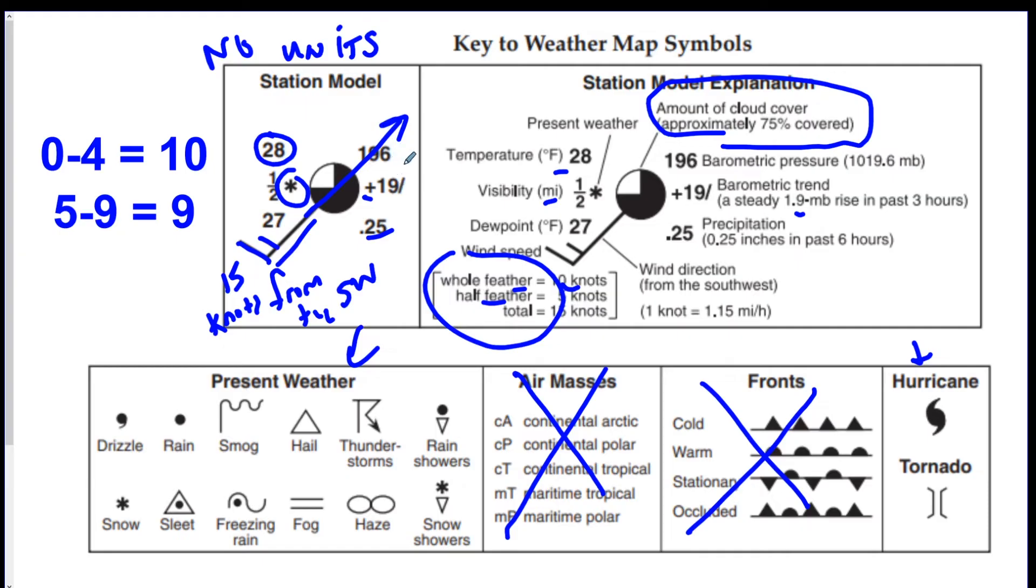One nine six to the actual pressure. So this one nine six on the station model is not the actual pressure. What you have to do, see it says one nine six. So here's your cheat sheet. If the first number is between a zero and a four, you put a ten in the front.